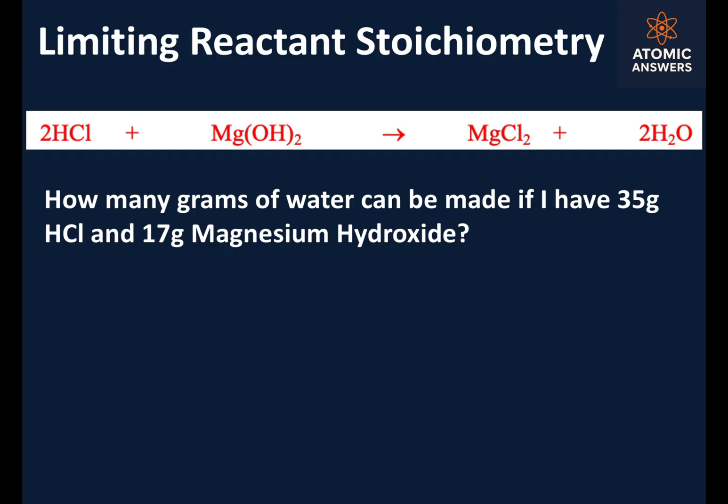How many grams of water can be made if I have 35 grams of hydrochloric acid and 17 grams of magnesium hydroxide? I give you a balanced chemical equation, I tell you how much reactant we have in grams, and we need to convert grams of reactant to grams of product — but we need to consider which one is the limiting reactant, because you can only make as much product as you have of your limiting reactant. So let's get started.